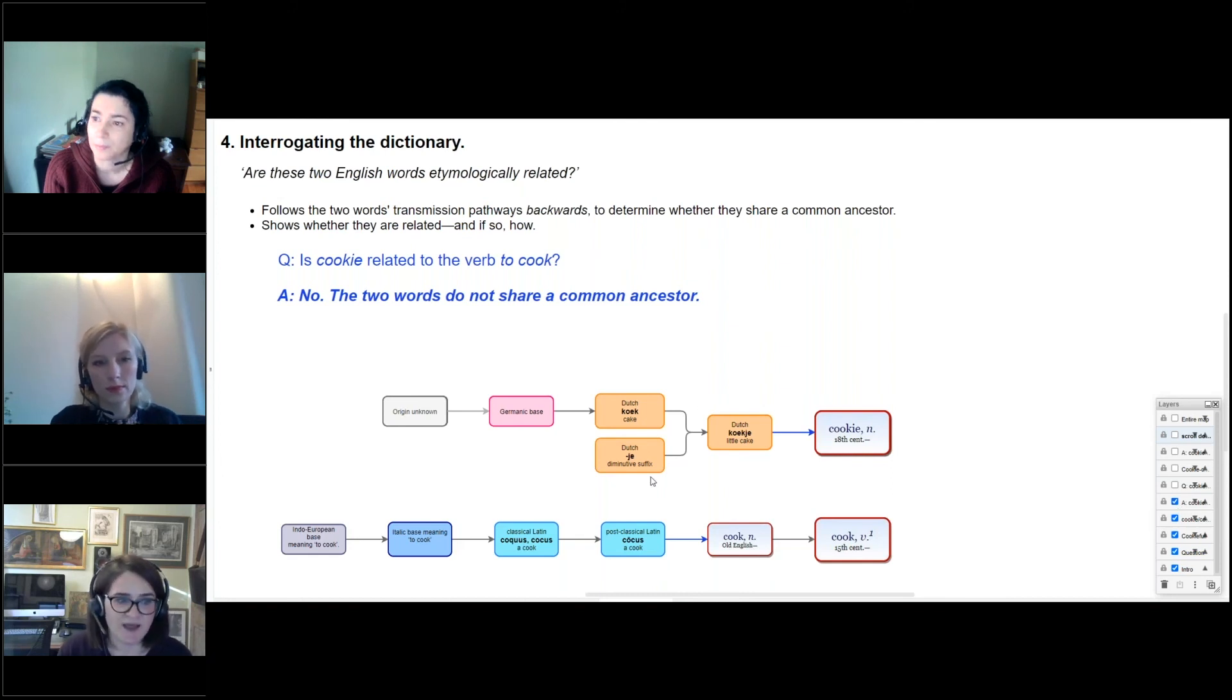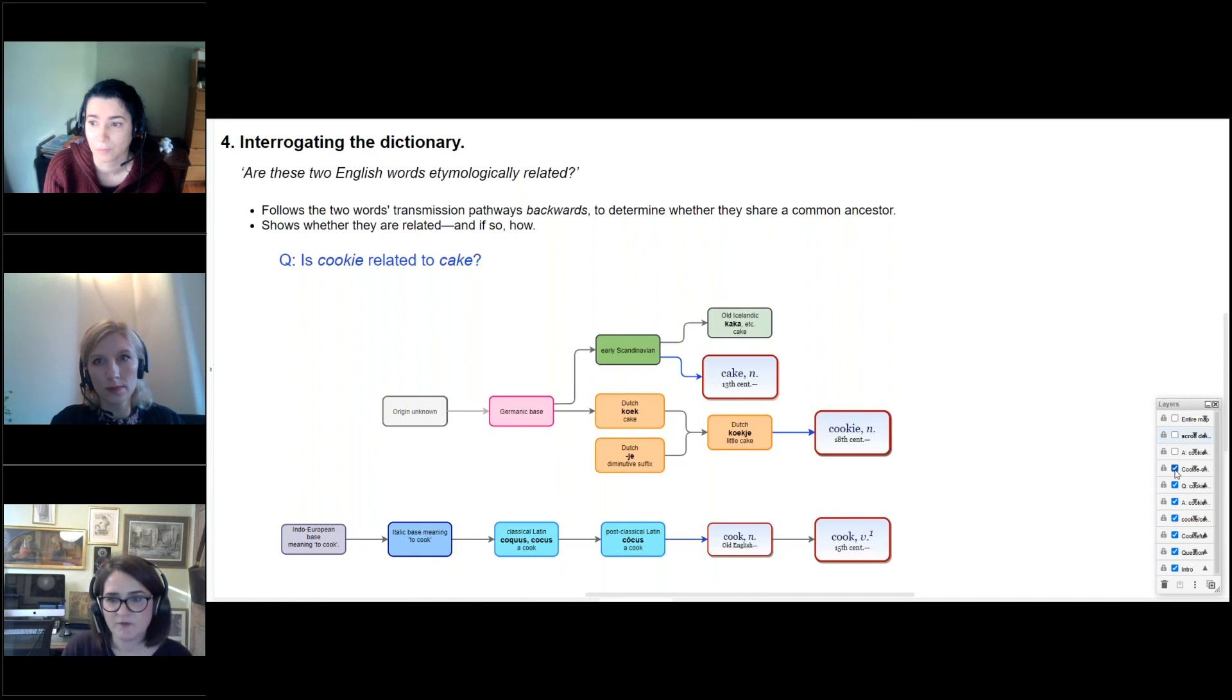On the other hand, having seen this little diagram, you might want to ask, is cookie related to cake? So in this case, mapping the two words together shows that their transmission pathways do in fact converge to a shared ancestor. So they both go back to the same Germanic base in pink here. So in this case, our answer is yes, cookie is etymologically related to cake.